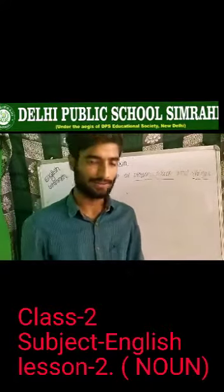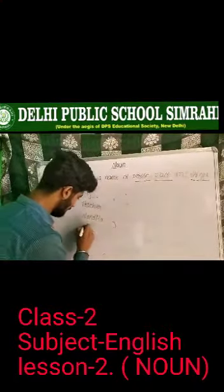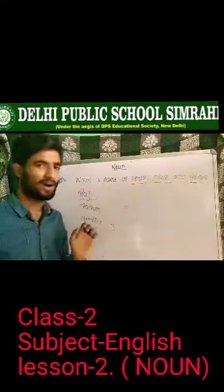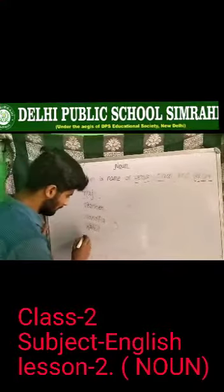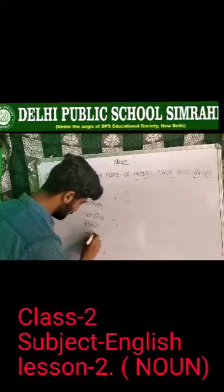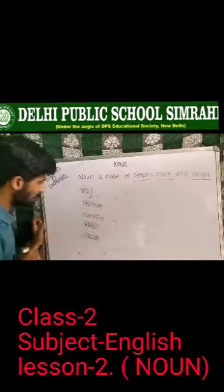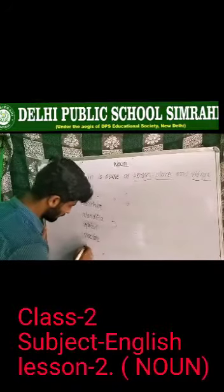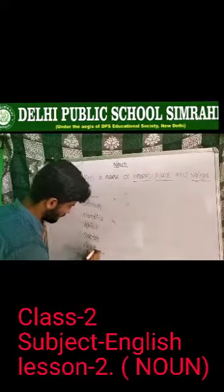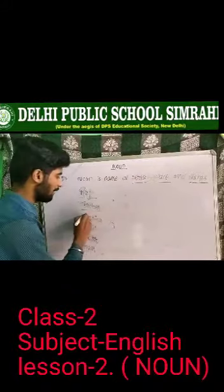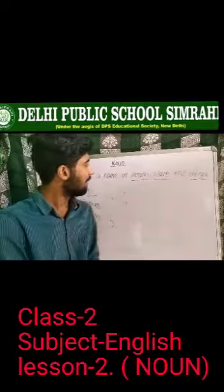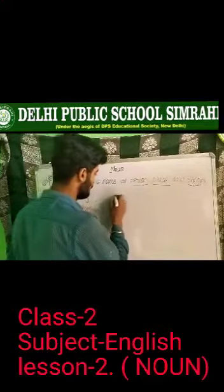Another one is Nandita — Nandita is the name of your class friend. Rahul is also a name of some particular person. Doctor is also a name. These are all names of persons. Now I'm going to write some names of place.